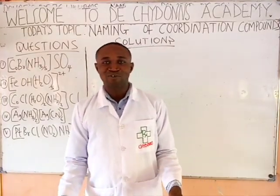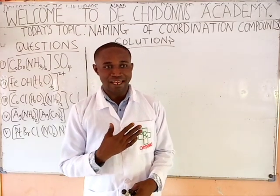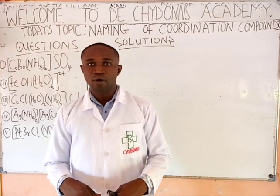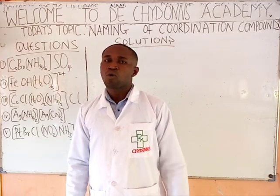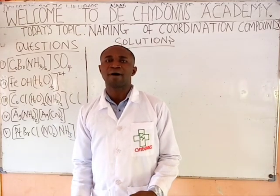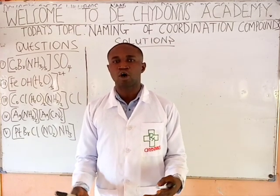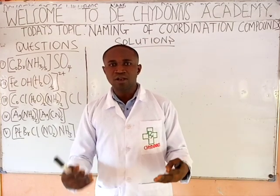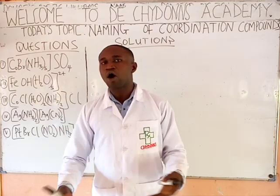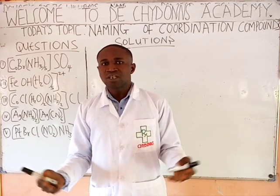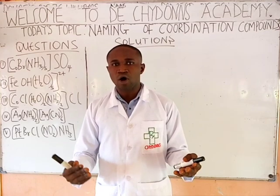Welcome to today's class with the Children's Academy. I am Mwanchupu Daniel. This afternoon we will be discussing learning of coordination compounds. A coordination compound is a complex whereby a metal atom or ion is bonded with a group of neutral molecules or anions. This group of neutral molecules or anions can be called ligands.